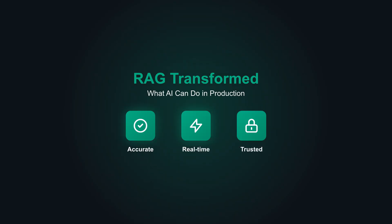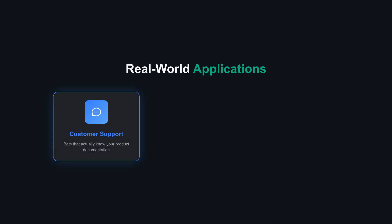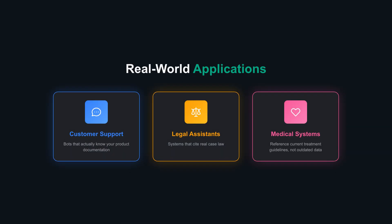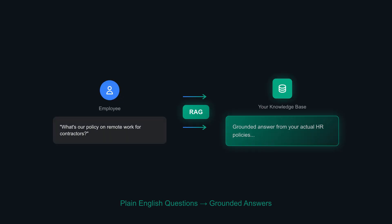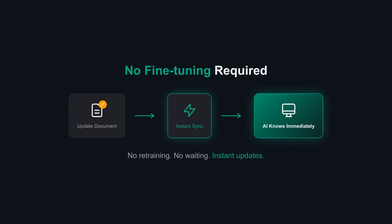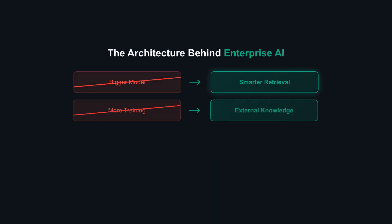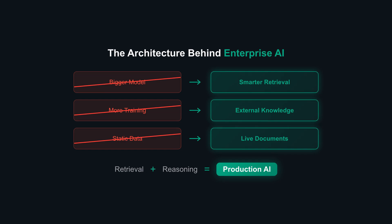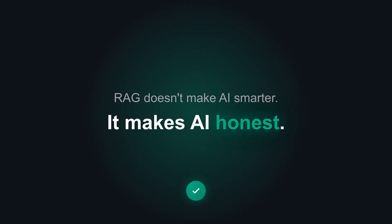RAG transformed what AI can do in production. Customer support bots that actually know your product documentation. Legal assistants that cite real case law. Medical systems that reference current treatment guidelines, not outdated training data. Your proprietary data becomes instantly searchable through natural conversation. Employees ask questions in plain English; answers come back grounded in your actual knowledge base. No fine-tuning required — update a document and the AI knows immediately. This is the architecture behind every serious enterprise AI deployment. Not a bigger model, not more training, just smarter retrieval feeding a reasoning engine. RAG does not make AI smarter. It makes AI honest.